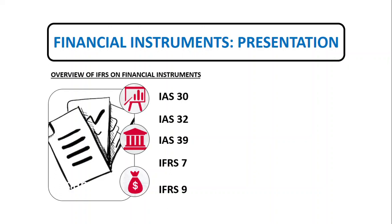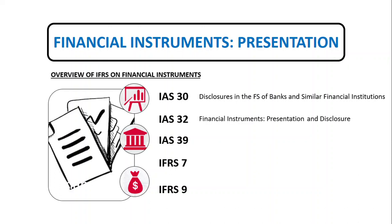The following are the standards which deal primarily with accounting for financial instruments. We have IAS 30 — Disclosure in the Financial Statements of Banks and Similar Financial Institutions. This is the very first accounting standard that covers financial instruments, since banks and other financial institutions were the first institutions to issue financial instruments. The Accounting Standards Board issued IAS 30 as a disclosure guidance for the financial statement presentation of banks and similar financial institutions. In March 1995, there was an issuance of IAS 32, which focused on presentation and disclosure of financial instruments.